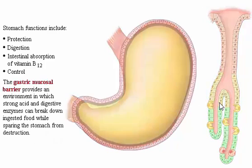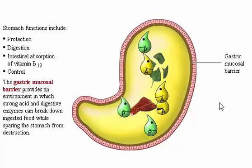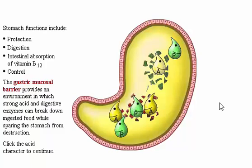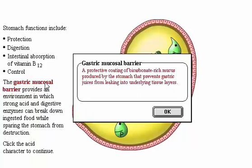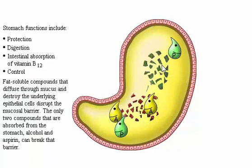The gastric mucosal barrier provides an environment in which strong acid and digestive enzymes can break down ingested food while sparing the stomach from destruction. Fat-soluble compounds that diffuse through mucus and destroy the underlying epithelial cells disrupt the mucosal barrier. The only two compounds absorbed from the stomach—alcohol and aspirin—can break that barrier.